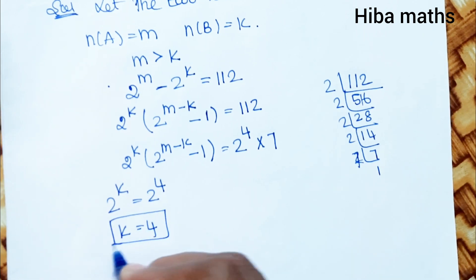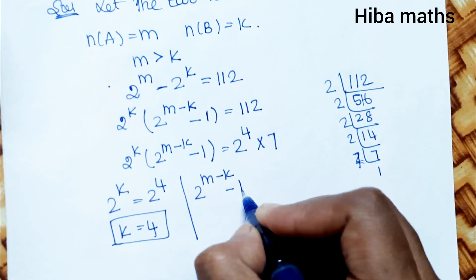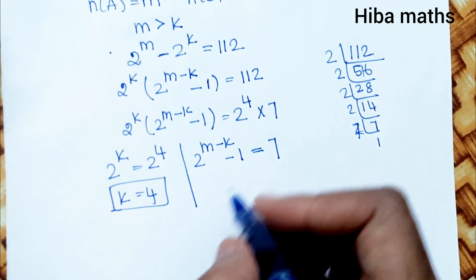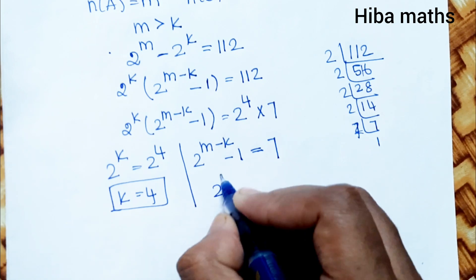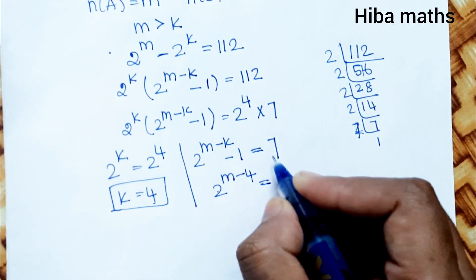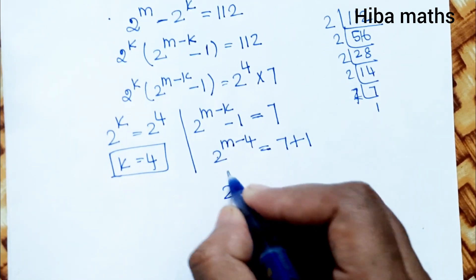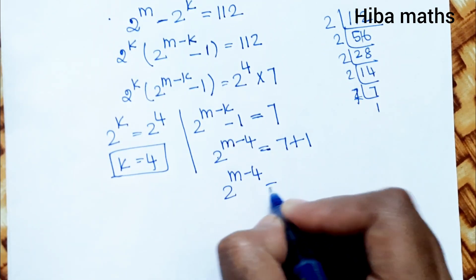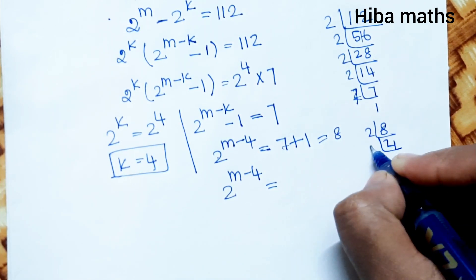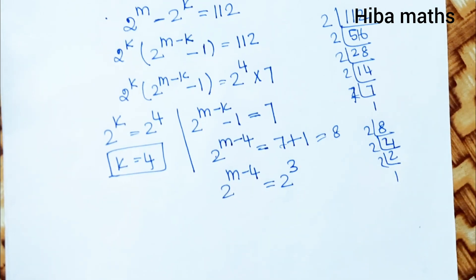Let's take the first equation: 2^(M-K) - 1 = 7. Now K = 4. Move minus 1 to the other side: 2^(M-4) = 7 + 1 = 8.